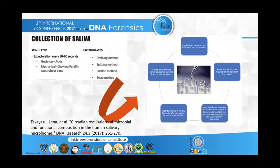Saliva collection methods include stimulated expectoration every 30 seconds by spitting, gustatory acid stimulation, and mechanical chewing using paraffin wax, rubber band, or chewing gums. Unstimulated saliva is collected by draining, spitting, suction, or swab methods. These are non-invasive, easy, and cost-effective, and saliva does not clot.